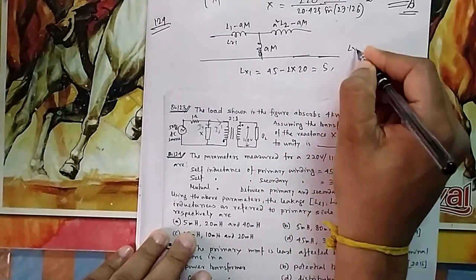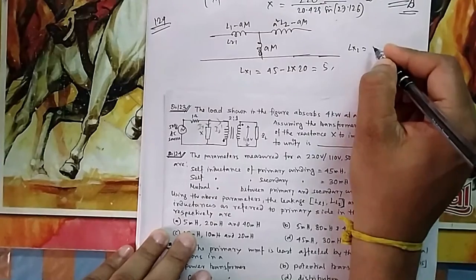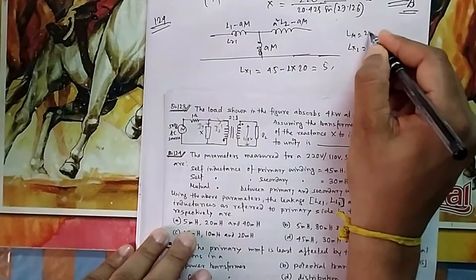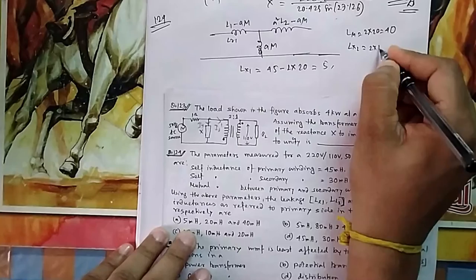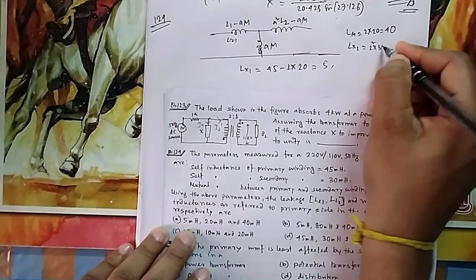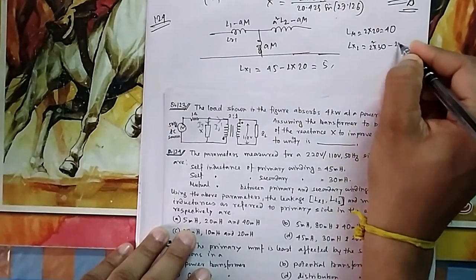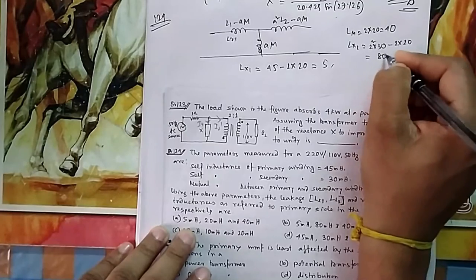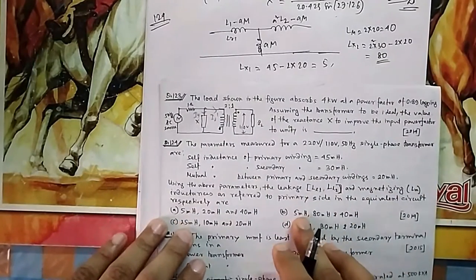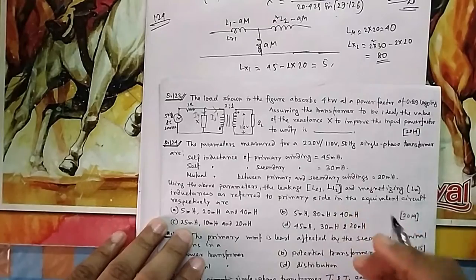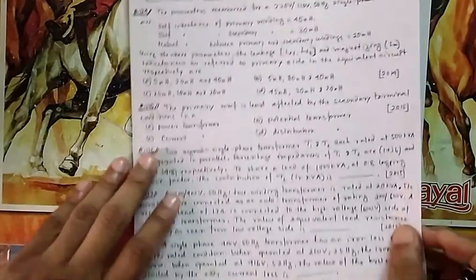And Lx2 will be equal to - Lm is equal to 2 times 20, that is 40. And Lx2 is equal to 2 square times L2 is 30 minus 2 times 20, so that is 80. So your answer will be L1, L2 first - so 5, 80, and then 40. So that is your option B.